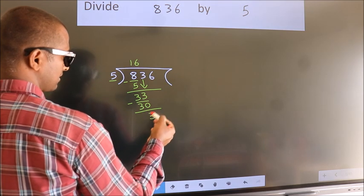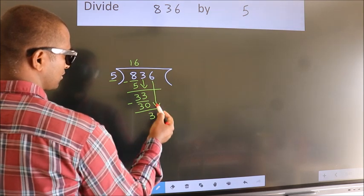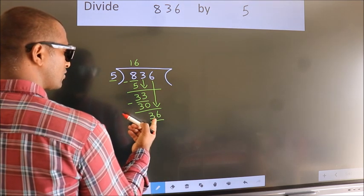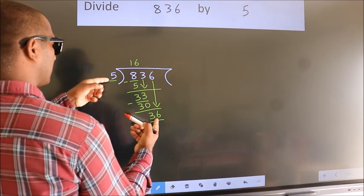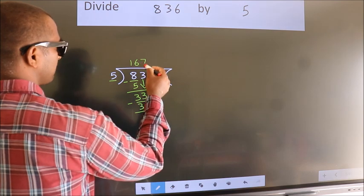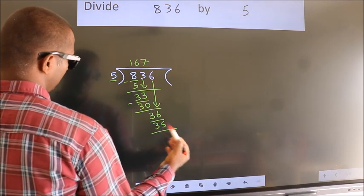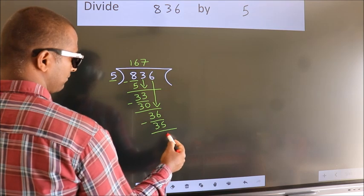After this, bring down the beside number. So 6 down. So 36. A number close to 36 in the 5 table is 5 times 7, 35. Now we subtract. We get 1.